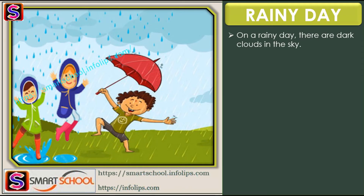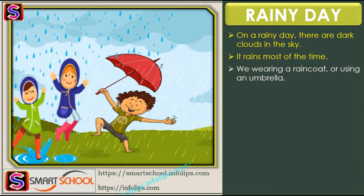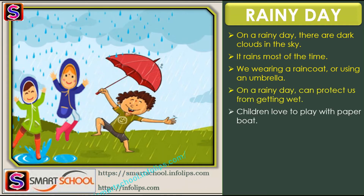On a rainy day there are dark clouds in the sky and rain falls most of the time. We wear a raincoat or use an umbrella to keep us dry. Children love to play with paper boats and float them in the water.